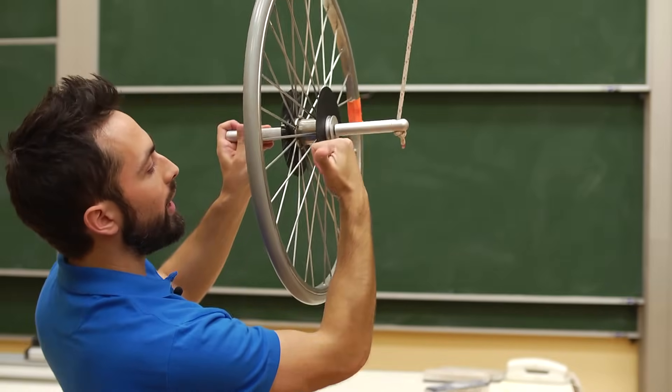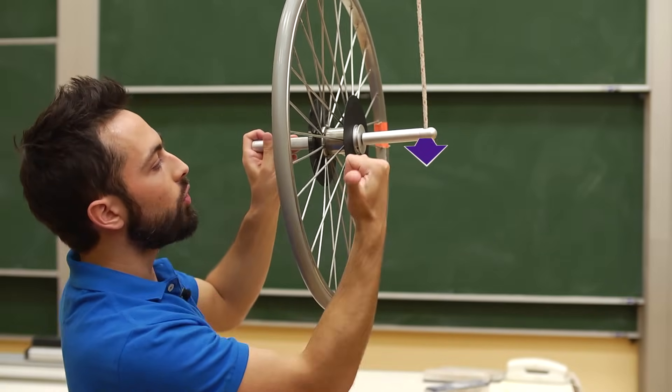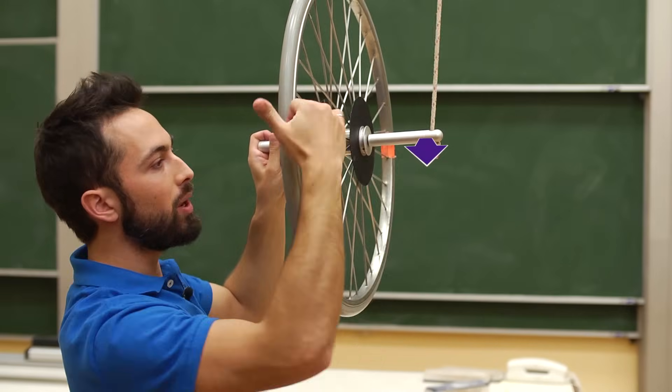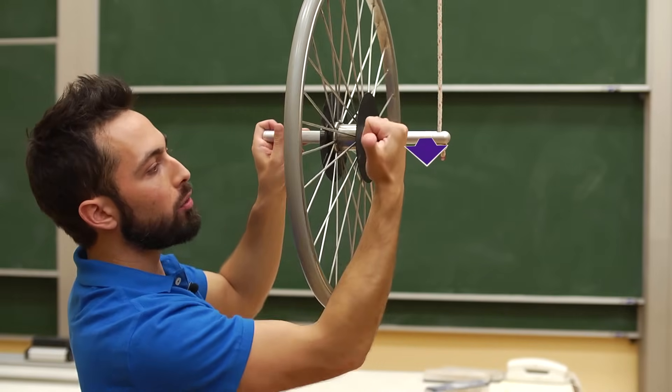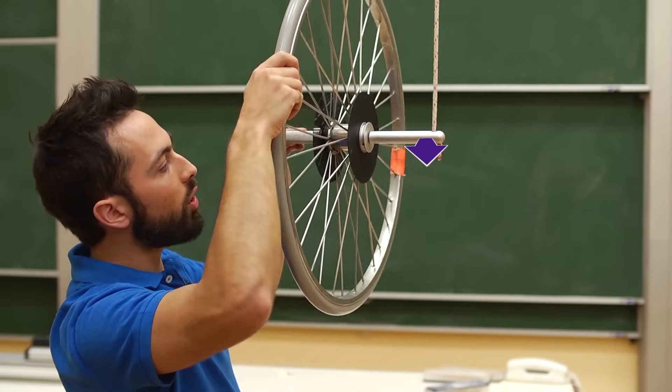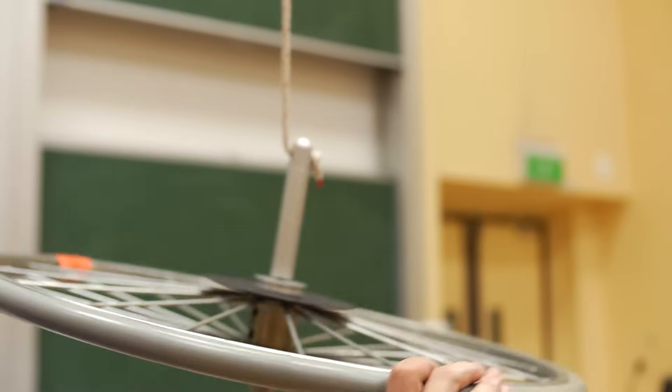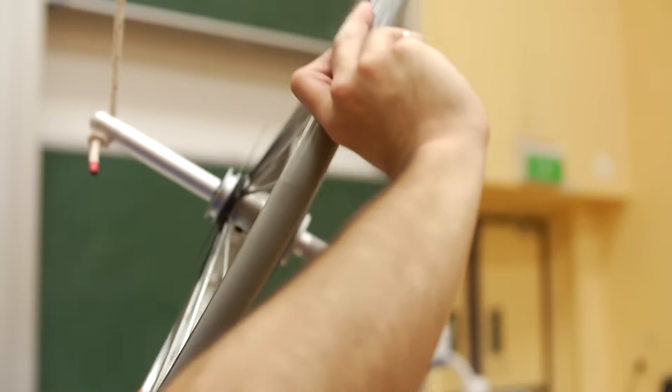There's a torque which is pointing out this way which is trying to increase the angular momentum of the system in that direction. Now angular momentum in that direction requires that the whole system starts swinging anti-clockwise. And so that is what happens.